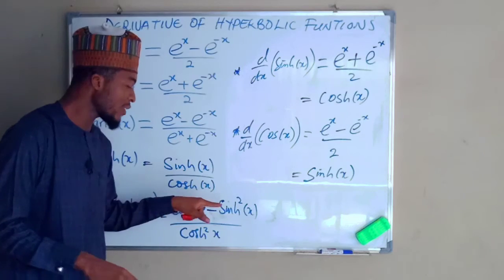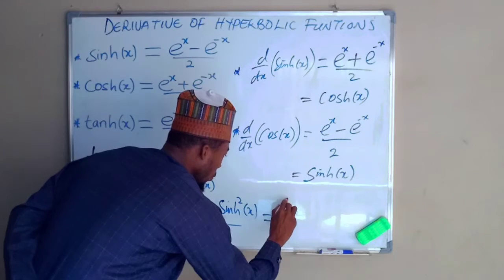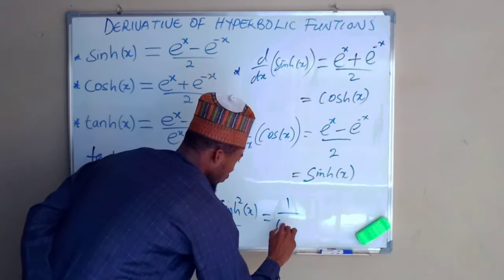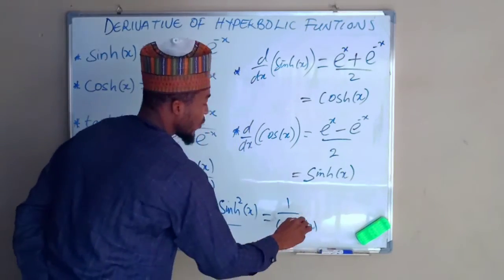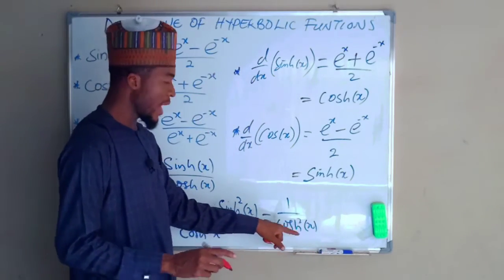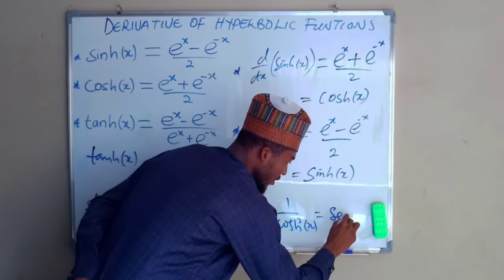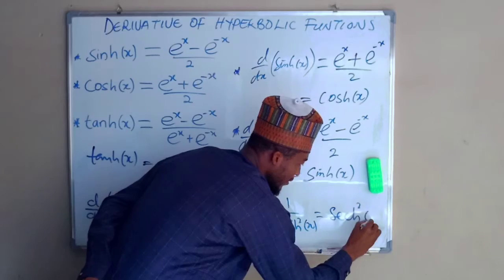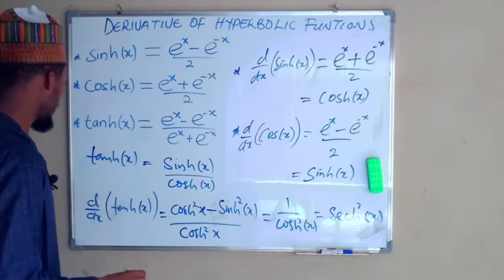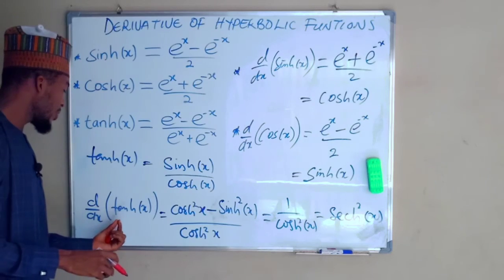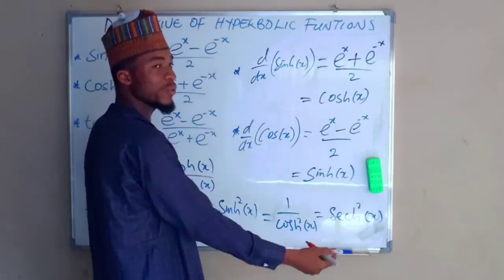In hyperbolic functions, cosh²(x) minus sinh²(x) equals 1. So our numerator becomes 1, divided by cosh²(x). And 1 divided by cosh²(x) is the same as sech²(x). So we have finally found that the derivative of hyperbolic tangent of x is sech²(x).